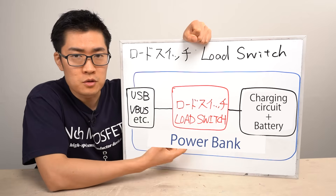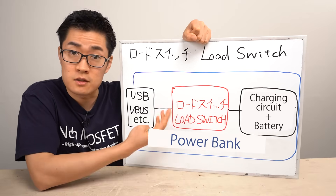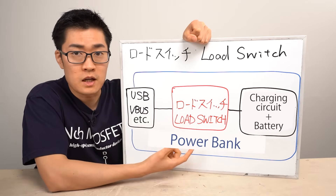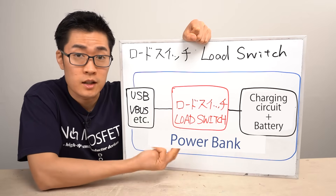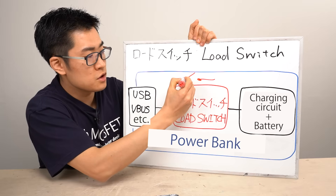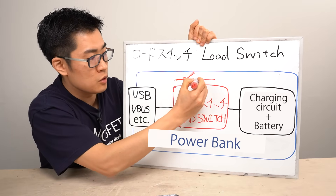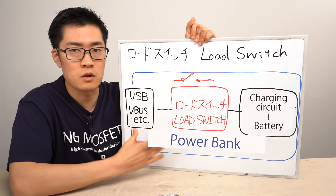When paired with a load switch controller, you can implement additional features such as over-voltage and over-current protection, reverse-current prevention, and power-saving functionality by opening the switch to completely cut off power when not needed.